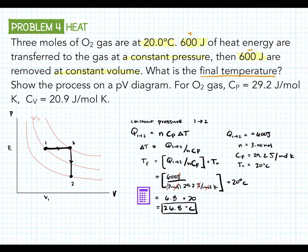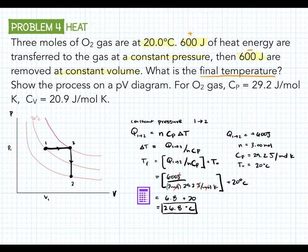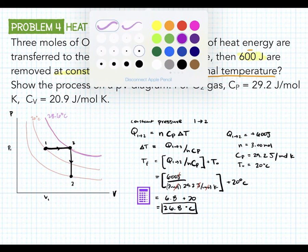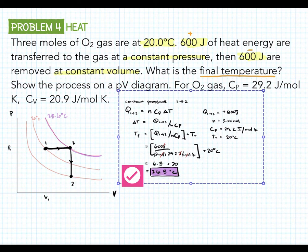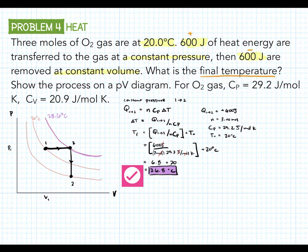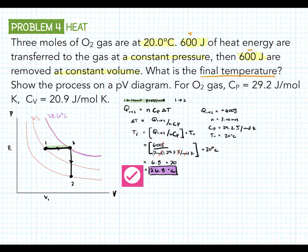That would be this curve right here. So that's 26.8 degrees Celsius. We can color that in so it matches. And that's our first part of the problem. This is our constant pressure process, which we'll make green. So constant pressure, 600 joules, all of that. And we start with this too.